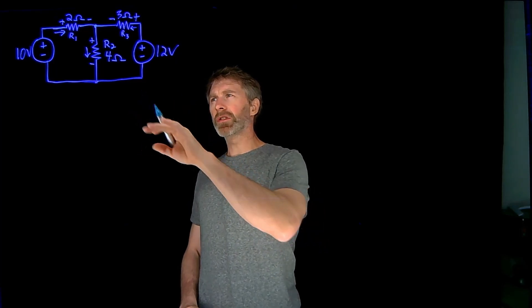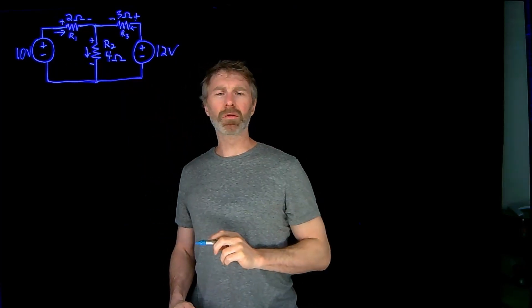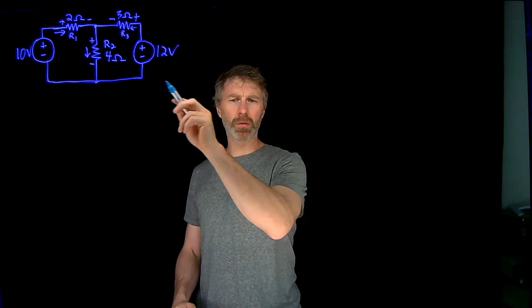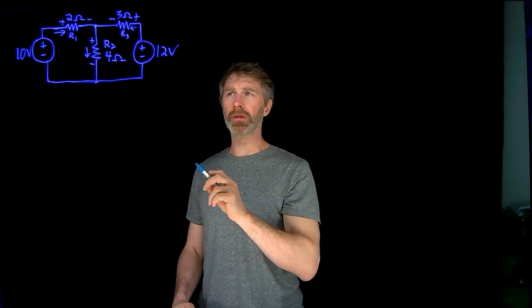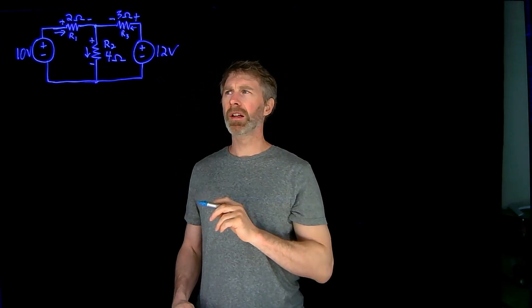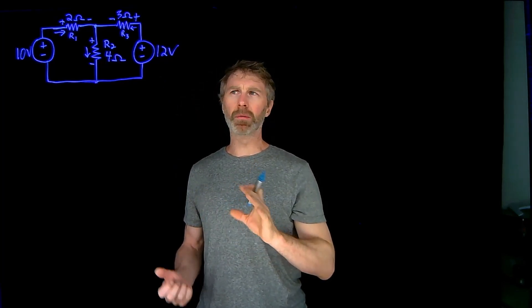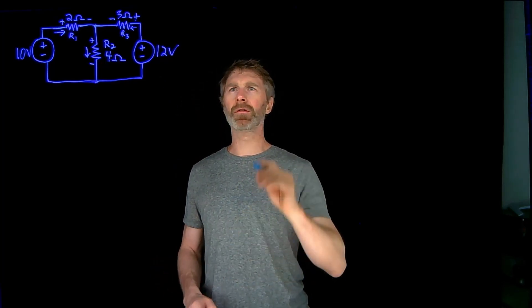To start, I'm going to redraw the circuit with just the 10-volt source and remove the 12-volt source. When removing a voltage source specifically, I short it — and that's effectively what happens when that voltage source is turned off.